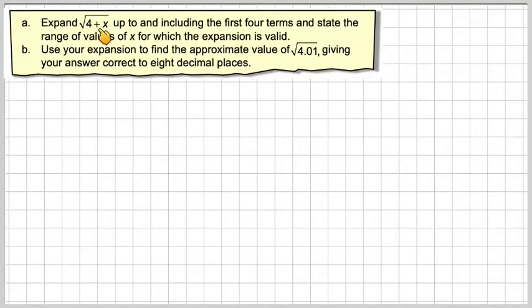Expand the square root of 4 plus x up to and including the first four terms and state the range of values of x for which the expansion is valid, and then use our expansion to find an approximate value of the square root of 4.01, giving your answer correct to eight decimal places.